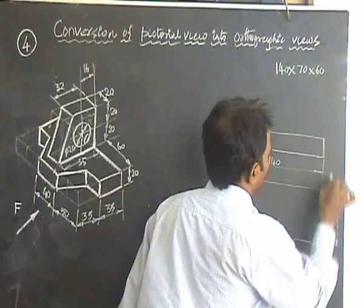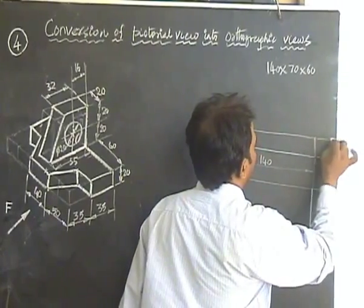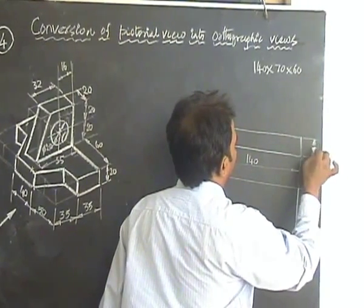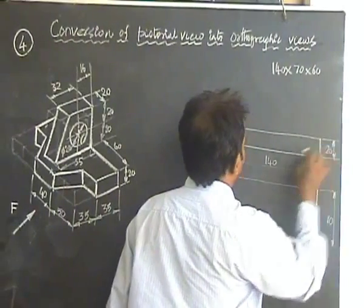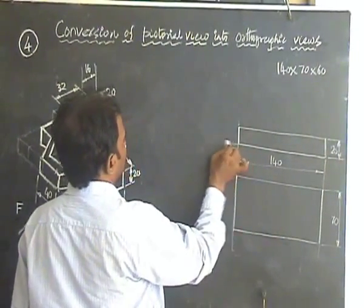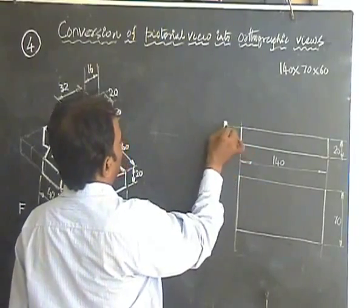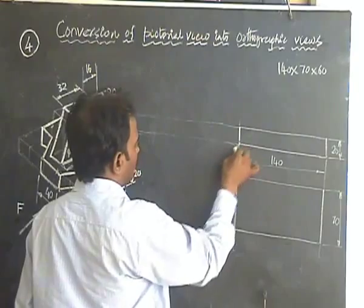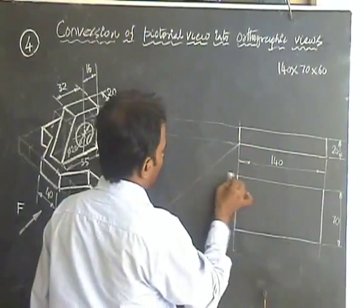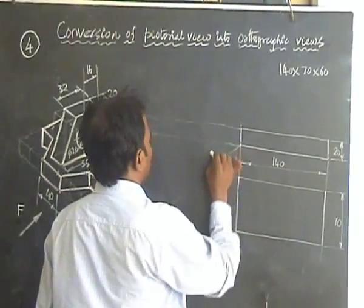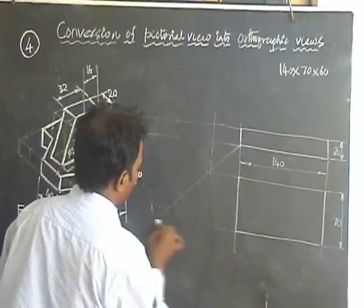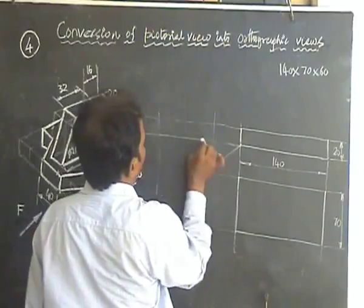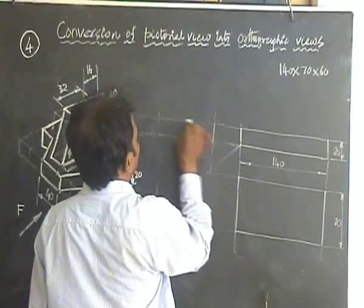Then the height is 20. You can make use of 45 degree line. Use 45 degree line. Bring this 70 to the side view. Just look like this. You get the first line. So when you project this, you get the second line. So the 70 is brought to the side.